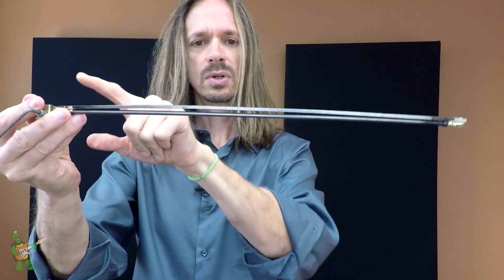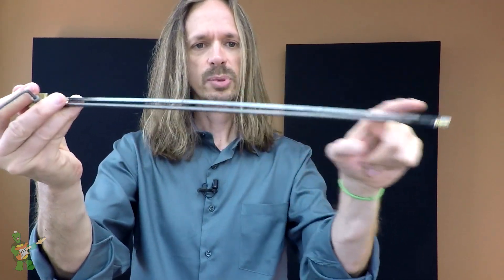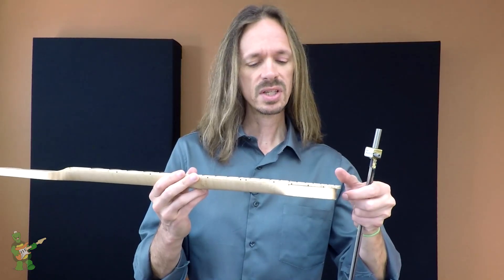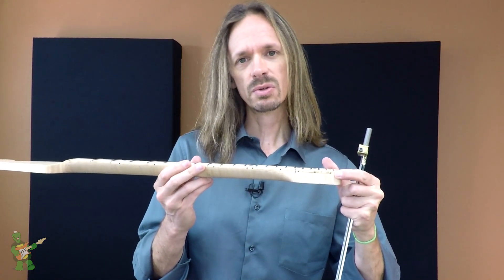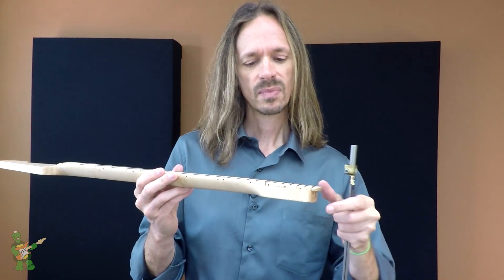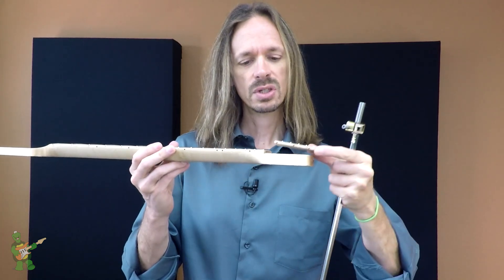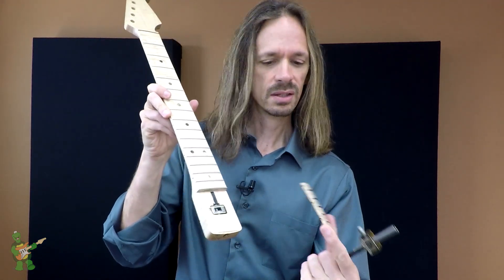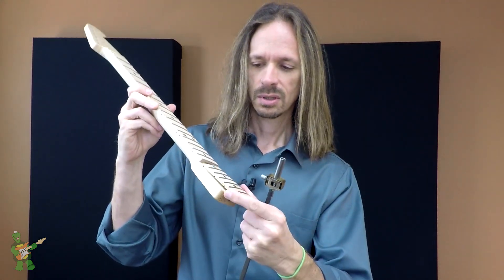Okay, so what we have here is a Stratocaster replacement neck that has a double truss rod with side adjust mechanism in it. We've cut away a portion of the fretboard, which was really hard to do by the way, that took forever, but that's the kind of thing we do for you guys.